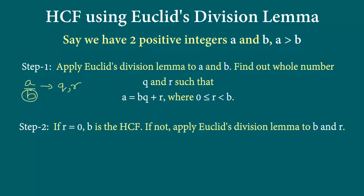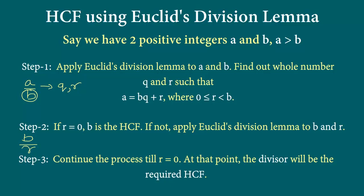But what happens if the remainder is not 0? We continue applying Euclid's division lemma, but now instead of a we use b, and instead of b we use r — the current remainder. So we divide b by r. The third step says we keep doing this until r is 0. Whenever r gets to 0, whatever is the divisor at that point will be the required HCF.